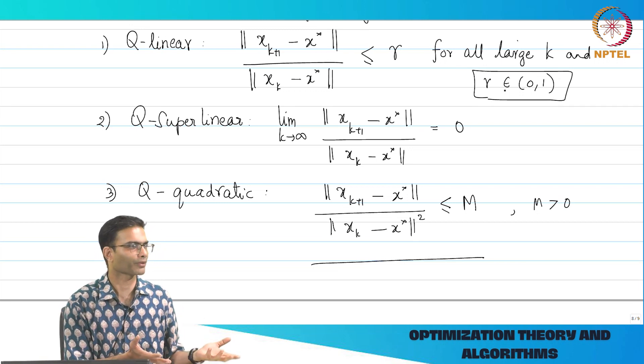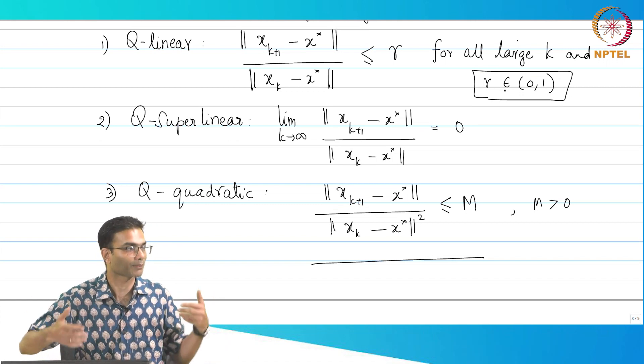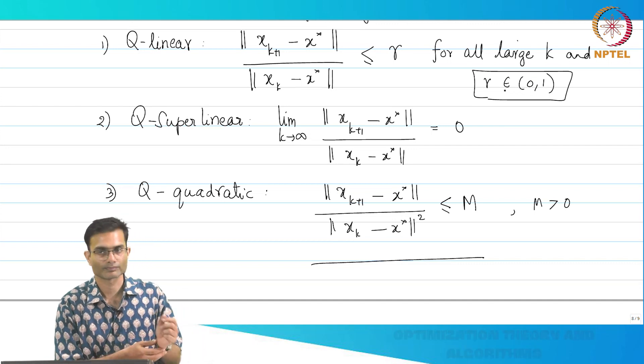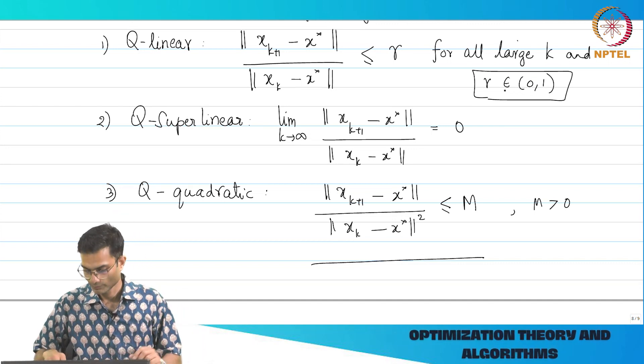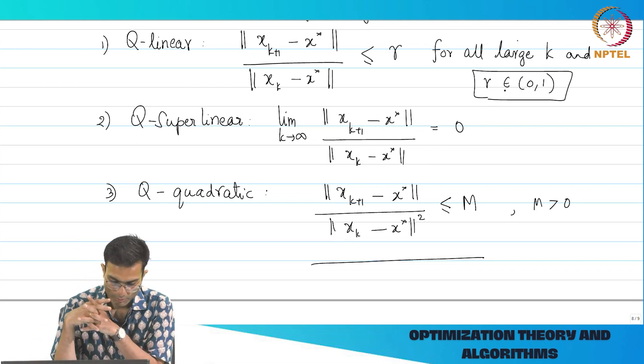From a practical point of view, that is what you are interested in, right. So quadratic will of course be as fast as linear, but it is much faster than linear. That is the sense in which we will use it.